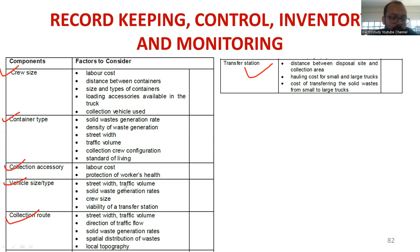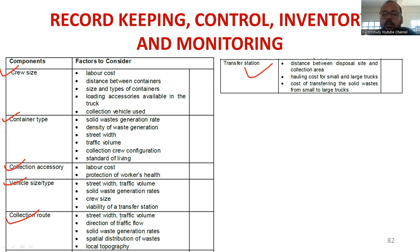For vehicle size and type, we consider whether compactor or non-compactor vehicles are used, crew size, visibility of the transfer station, street width, and traffic volume. Collection route parameters include street width, traffic volume, direction of traffic flow, local topography, and road congestion. For the transfer station, we monitor the distance between the disposal site and collection area, the control of small and large trucks, and the cost of transferring solid waste.